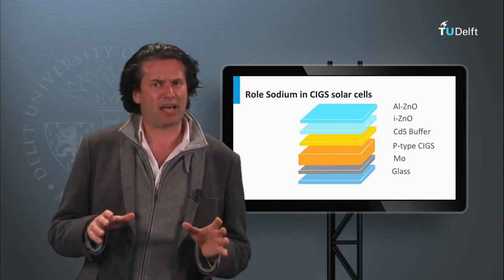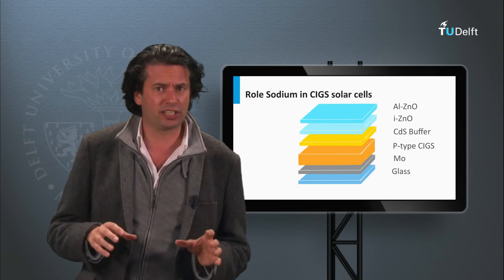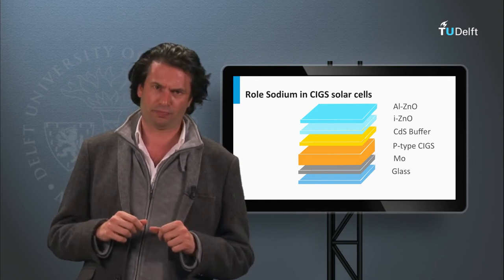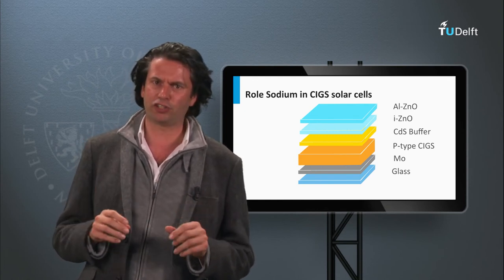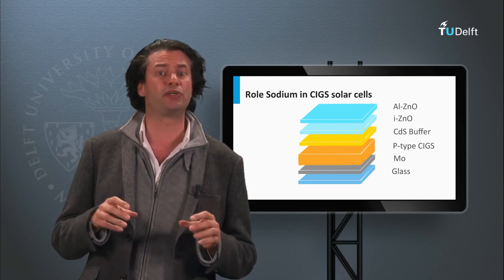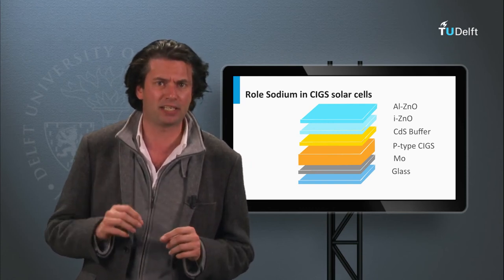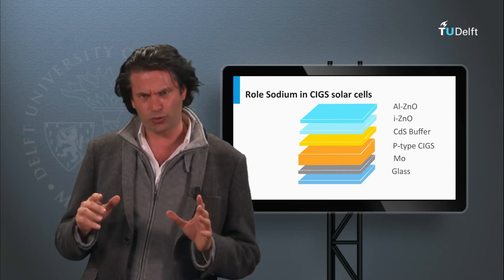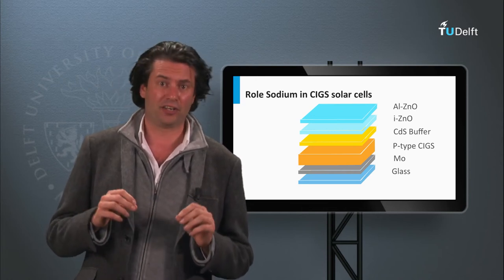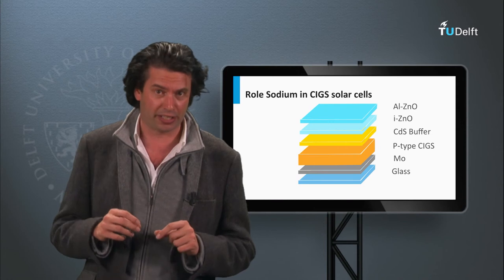One of the important aspects of CIGS solar cells is the role of sodium. Low contamination of sodium appears to increase the conductivity in the p-type CIGS materials. It leads to a welcome texture and an increase in the average grain size.